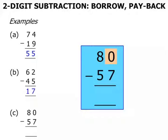So let's think of the 0 we need to borrow 1 and pay back 1. So now we have 10 minus 7 which is 3.